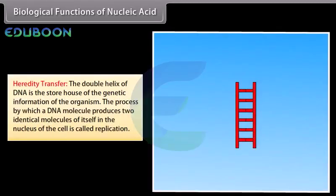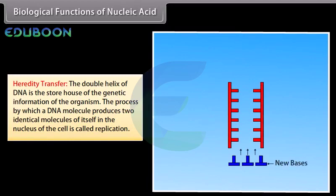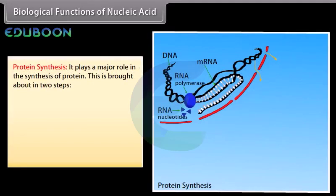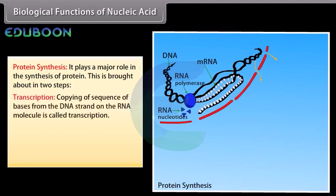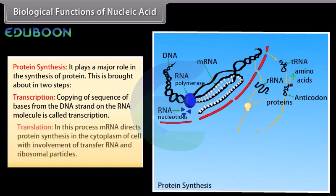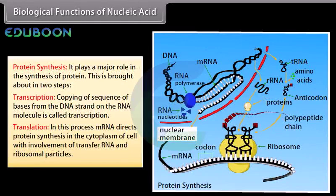Biological functions of nucleic acid: Heredity transfer - the double helix of DNA is the storehouse of the genetic information of the organism. The process by which a DNA molecule produces two identical molecules of itself in the nucleus of the cell is called replication. Protein synthesis: DNA plays a major role in the synthesis of protein, brought about in two steps. Transcription is the copying of the sequence of bases from the DNA strand onto the RNA molecule. Translation: in this process, mRNA directs protein synthesis in the cytoplasm of the cell with involvement of transfer RNA and ribosomal particles.